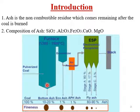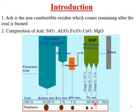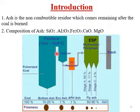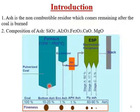The flue gas carries fly ash. When you travel through the electrostatic precipitator (ESP), the majority of ash collected is fly ash — about 80 to 90%. In a power plant, there is 20% bottom ash and 80% fly ash.